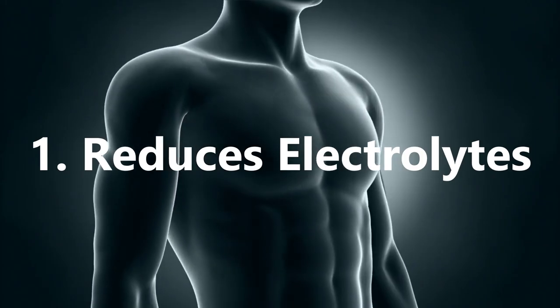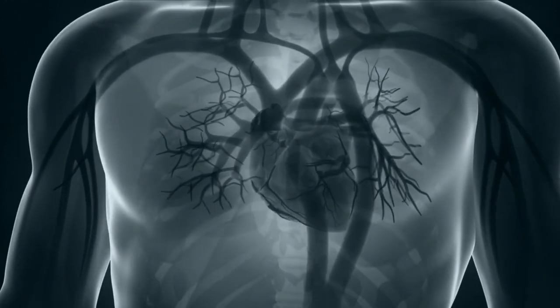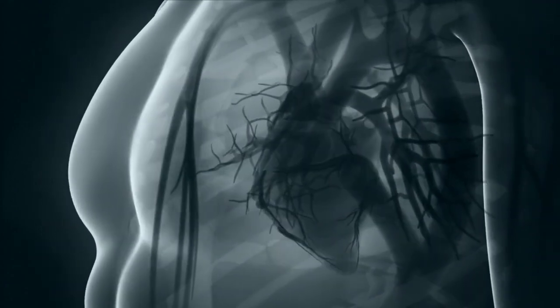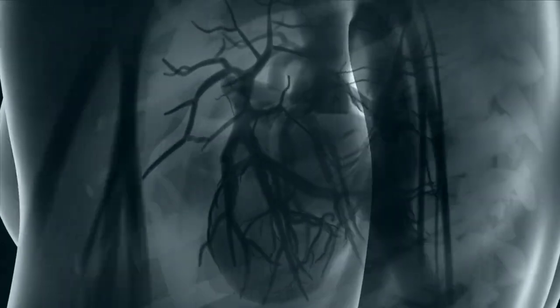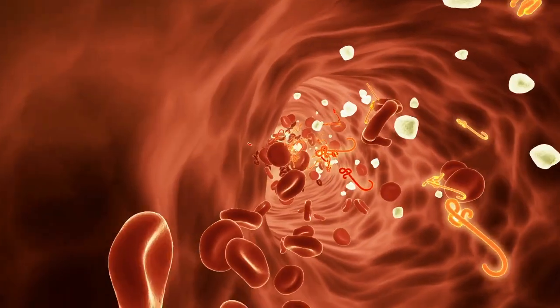Number 1: Reduces Electrolytes. Electrolytes are minerals in your body that have electric charge and are in your blood, urine, tissues and other body fluids. Water can dilute the electrolytes in your blood, especially sodium, and when sodium levels fall low, it is called hyponatremia.